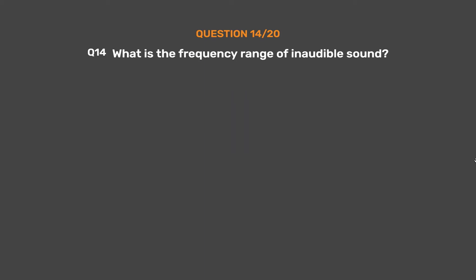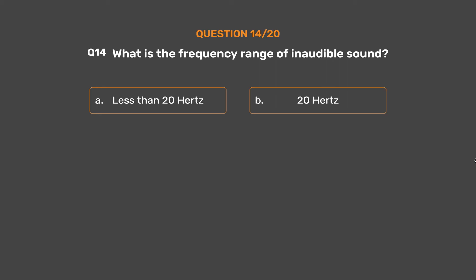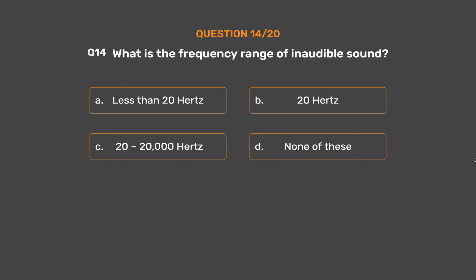Question number 14. What is the frequency range of inaudible sound? Option A, Less than 20 Hz; Option B, 20 Hz; Option C, 20 to 20,000 Hz; Option D, None of these.